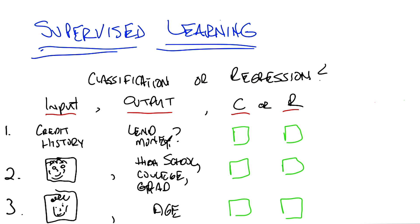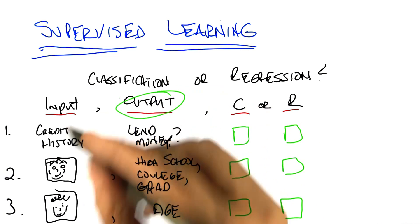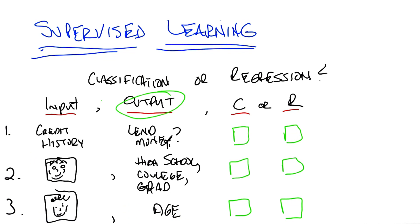Is that right? Right, that's exactly right. The difference between a classification and regression task is not about the input, it's about the output. If the output is continuous, then it's regression. And if the output is a discrete set, then it is a classification task.